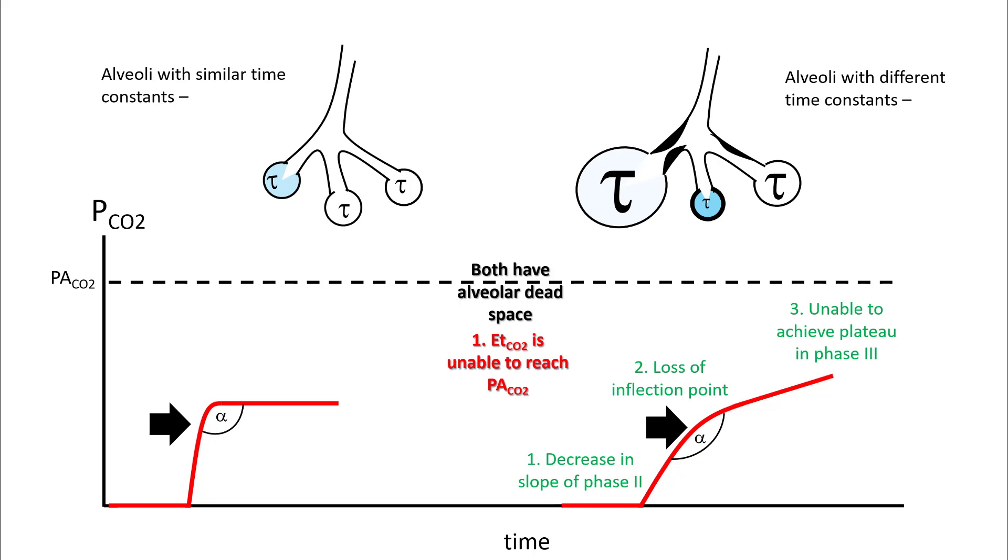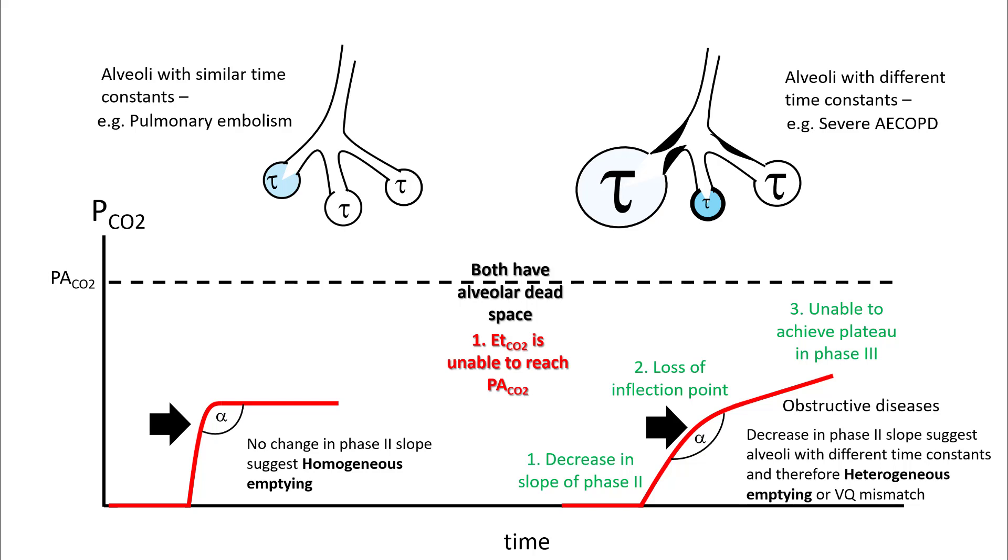As the obstruction gets more severe, alveoli with different time constants is typically seen in severe COPD exacerbation. And as the exacerbation increases, the slope of phase two becomes lower.